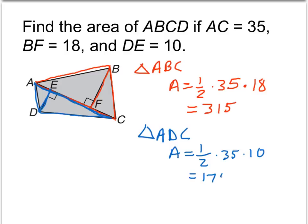And so the total area of the quadrilateral ABCD is the sum of 315 and 175. And so our total area is 490 square units.